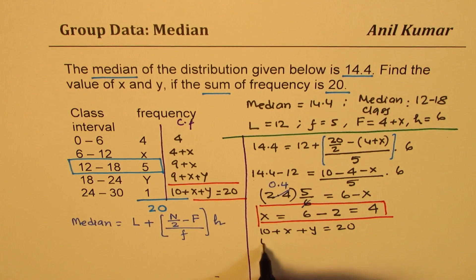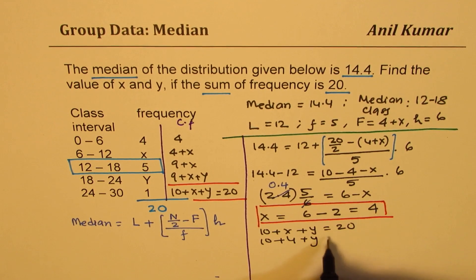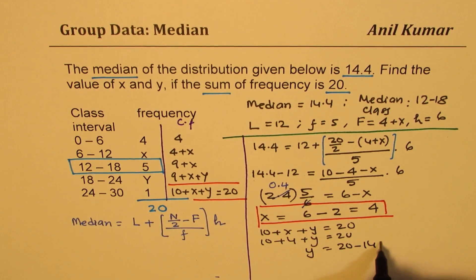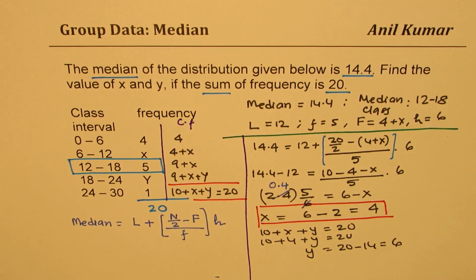So we get 10 plus 4 plus y equals 20. So that gives you y equals 20 minus 14 which is 6. So we get y as 6.